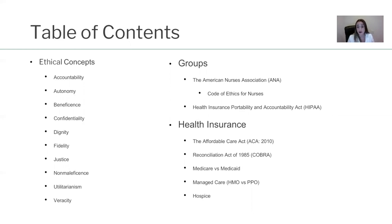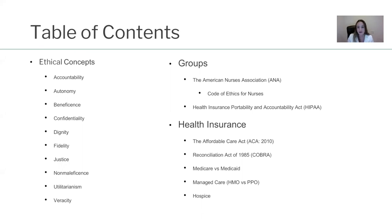We have to talk about some groups — the American Nurses Association and the Code of Ethics for Nurses. We'll talk about that without putting you to sleep. And we're going to talk about the Health Insurance Portability and Accountability Act, HIPAA, which I know you know so well, but just a little refresher. We also have to talk about — this is the best — health insurance. The Affordable Care Act, the Reconciliation Act of 1985, or COBRA, Medicare versus Medicaid, managed care, HMO versus PPO, and hospice.